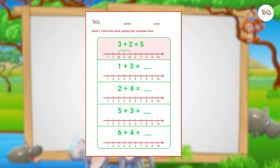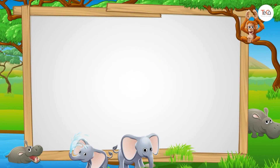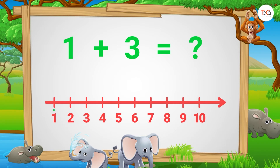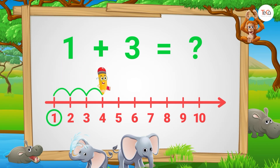Now, let's check if your answers are correct. To find 1 plus 3, start from number 1. Then jump three numbers to the right. Here we stop at number 4. So, 1 plus 3 equals 4.